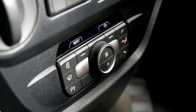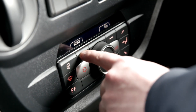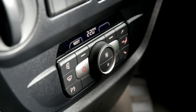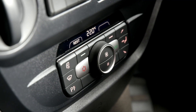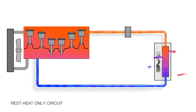When the engine is switched off, 'rest' appears on the controller and pressing the soft key will give you 30 to 45 minutes of residual heat from the engine, allowing the cab temperature to be maintained until the coolant temperature drops. Let's look at how this works.